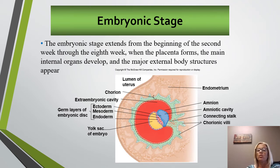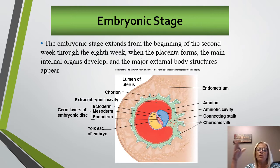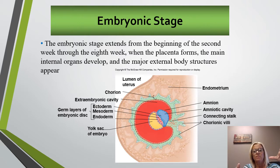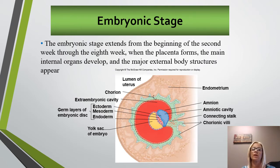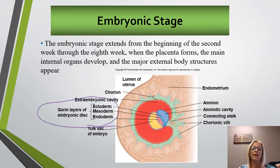The embryonic stage starts at the beginning of the second week and goes through to the eighth week when we have placental formation. The main internal organs will develop and the major external body structures appear. The primary germ layers serve as primitive tissues or precursor tissues that will later form these organs. These three layers are the endoderm, the mesoderm, and the ectoderm.